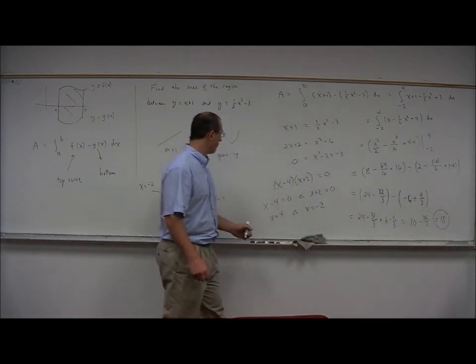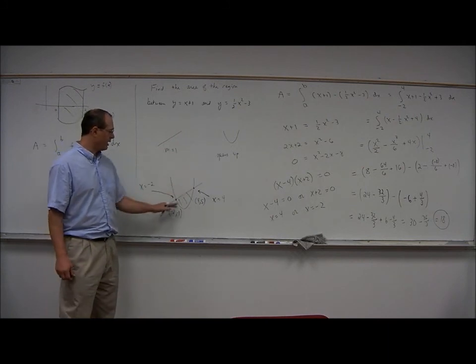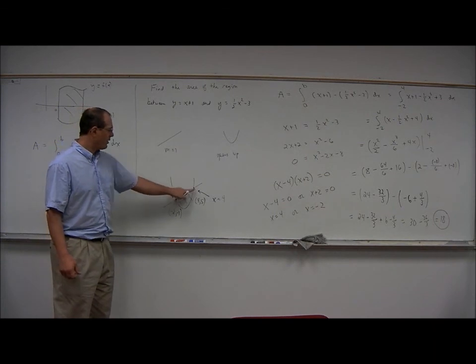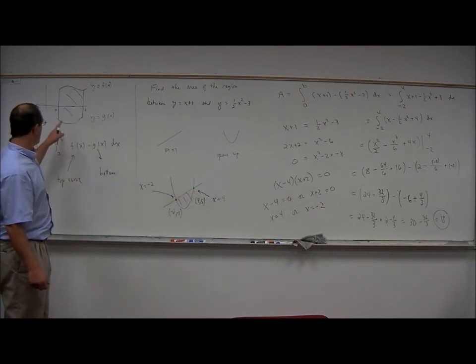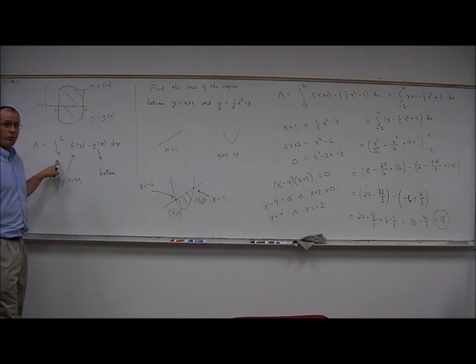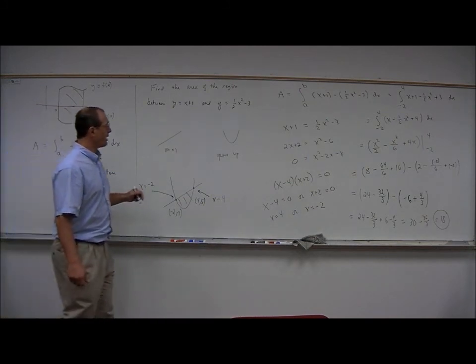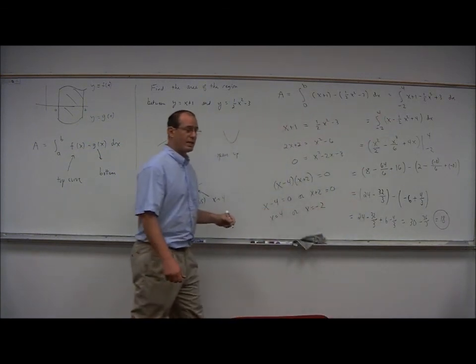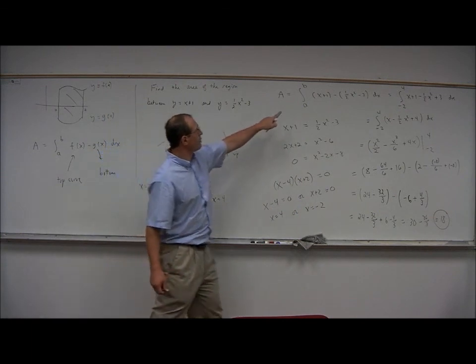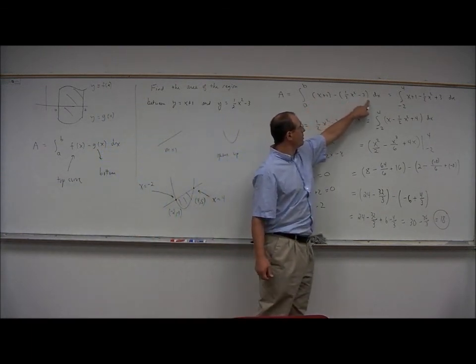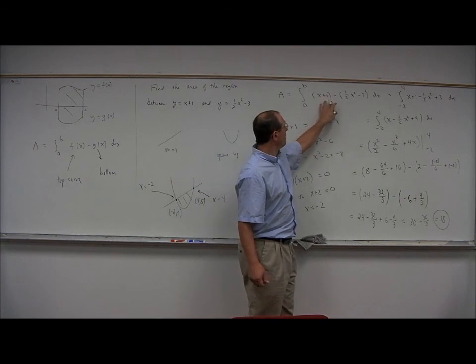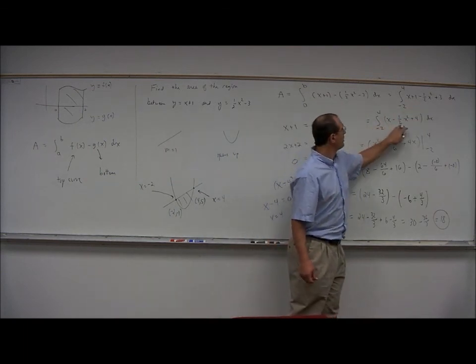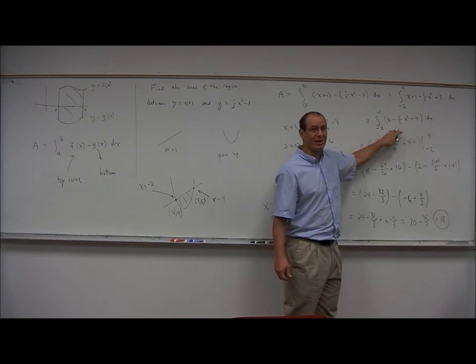So the area of the region between the line and the parabola works out to 18. We had to figure out where the two curves crossed because that gave us the A and B in our formula for calculating the area. That turned out to be negative 2 and 4. We had to recognize the top curve and the bottom curve. The top curve was the line, the bottom curve was the parabola. Do a little bit of algebra simplifying that difference, and the difference is expressed as a polynomial.